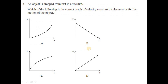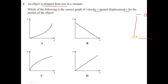Question four: an object is dropped from rest in a vacuum — which graph correctly shows velocity v against displacement s? The object is dropped from some height; instead of h I use displacement s, measured downward to the ground.